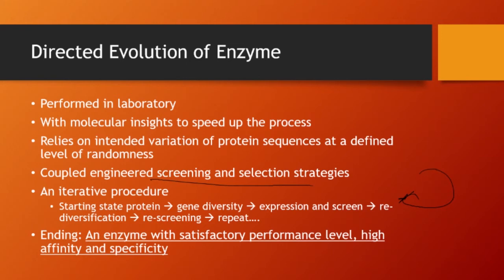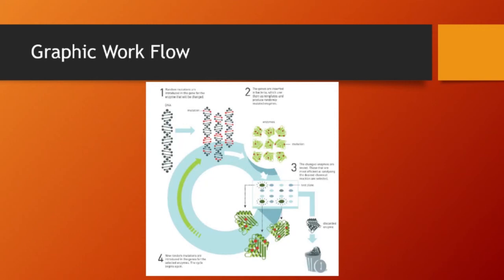It really relies on intended variations of protein sequence defined at the level of randomness — we create some randomness at the protein level, creating a small population of different proteins or enzymes. Then we go through some type of special screening and selection strategy to screen out those variants that have the desired property. It is an iterative, circular process. You start with a protein in a starting state, generate some type of mutation for genetic diversity, clone it into expression and screening systems, screen it, and repeat the process. Slowly, through directed evolution, you screen for the molecule with satisfactory performance.